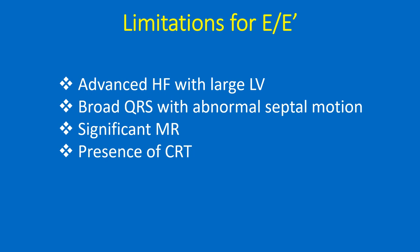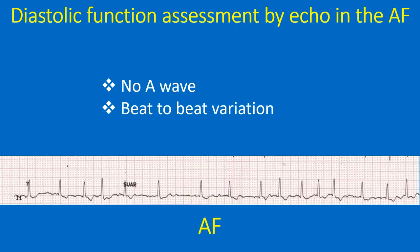There are limitations for E-by-E prime in the assessment of LV diastolic dysfunction. Decompensated advanced systolic heart failure with a large left ventricle, broad QRS with abnormal septal motion, significant mitral regurgitation, and presence of cardiac resynchronization therapy are all confounding factors. Usually, LV diastolic dysfunction assessment by echo relies on mitral inflow velocity measurement with demonstration of E-by-A reversal. However, in atrial fibrillation, the absence of atrial contraction and the A-wave makes this assessment impossible.